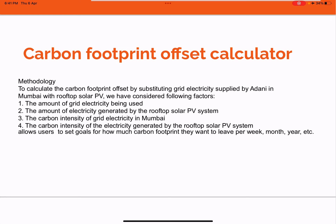The calculator should consider the amount of grid electricity currently being used. It should also have data on how much electricity would be generated by the rooftop solar PV system — that is, how much we'd substitute. The third input is the carbon intensity of the grid electricity, which is its emission factor, and finally the carbon intensity of electricity generated by the rooftop solar PV system.